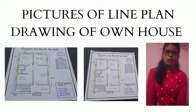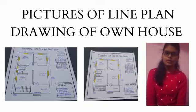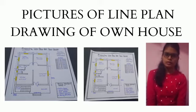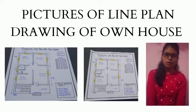So these are the pictures of the line plan of our own house. For constructing this type of line plan, the expenditure is approximately 12 lakhs. This way we complete our line plan for own house. Thank you.